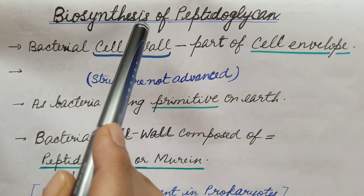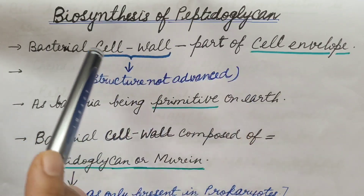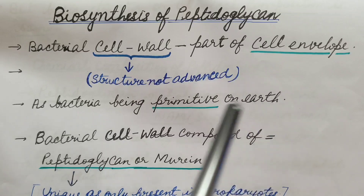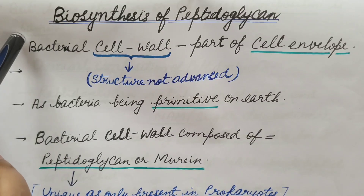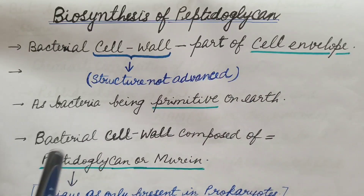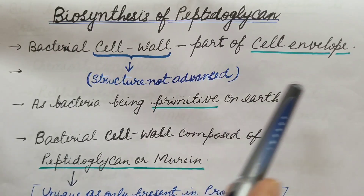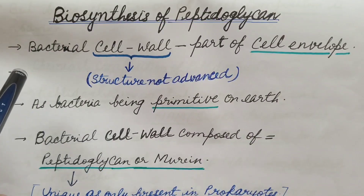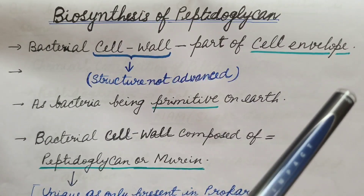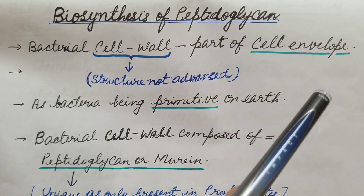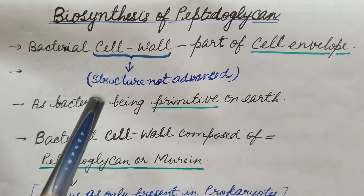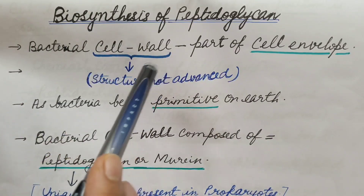In this video we are going to discuss biosynthesis of peptidoglycan. It is part of the syllabus of the CSIR NET exam. As discussed earlier, the bacterial cell wall is part of the cell envelope. The cell envelope has three parts: glycocalyx, cell wall, and cell membrane or plasma membrane.